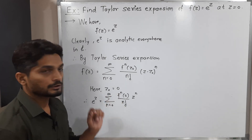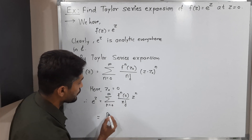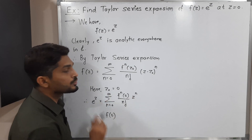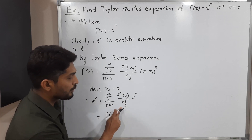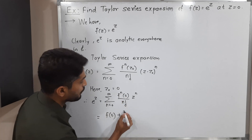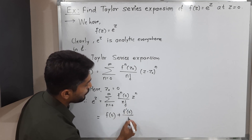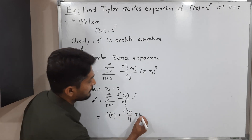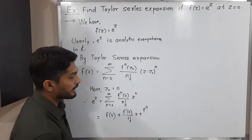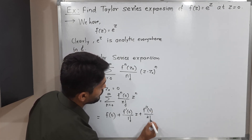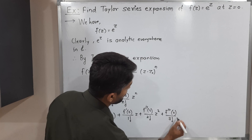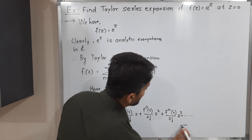Putting n = 0 first: we get the 0th derivative, that is the original function, so f(0) divided by 0 factorial (which is 1), times z^0 (which is 1), giving f(0). For n = 1: the first derivative of f at 0, divided by 1 factorial, times z. For n = 2: the second derivative f''(0) divided by 2 factorial, times z². And for n = 3: the third derivative f'''(0) divided by 3 factorial, times z³, and so on. Let us call this equation (1).